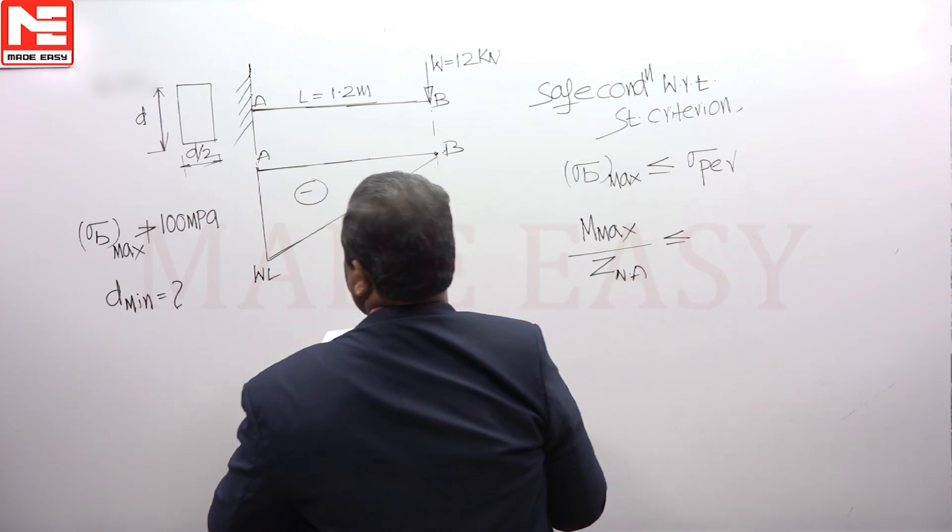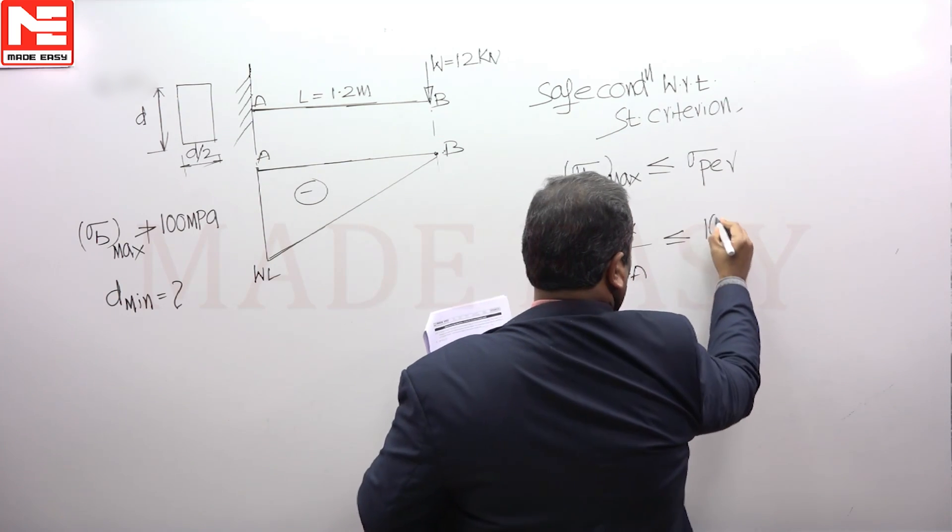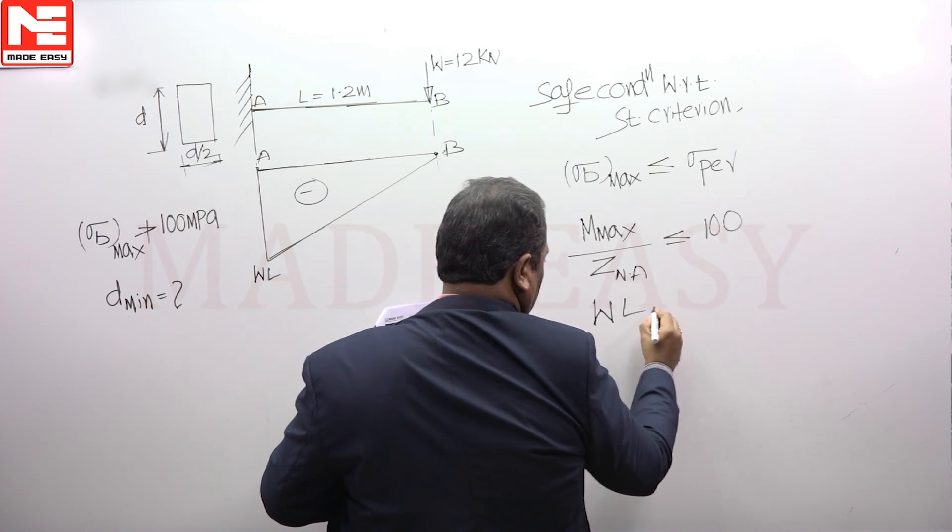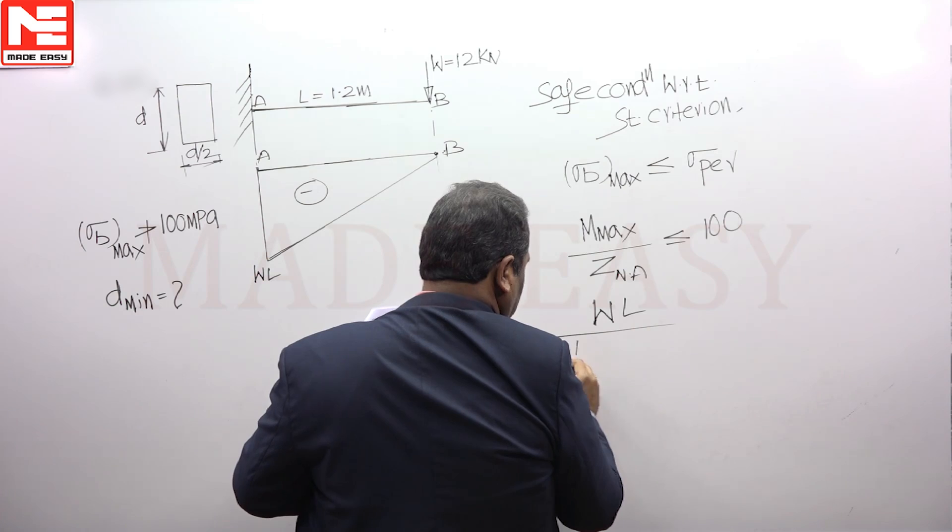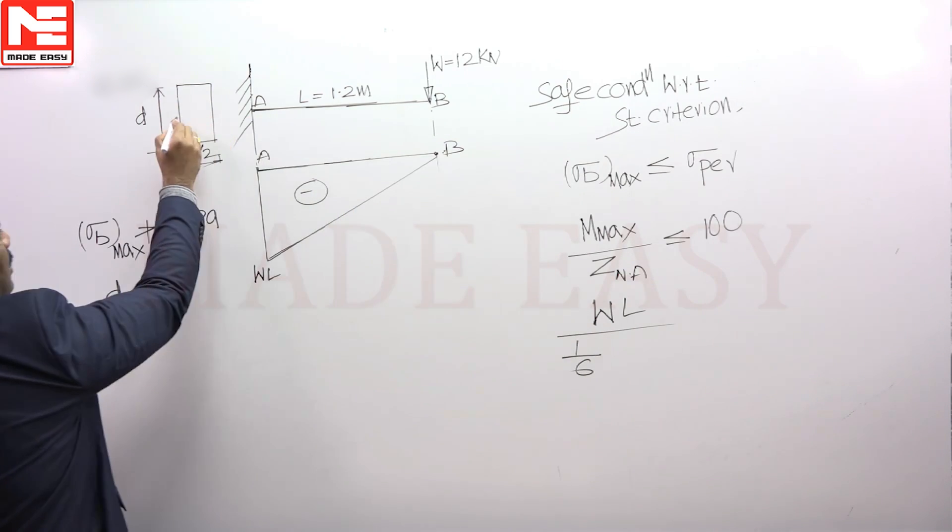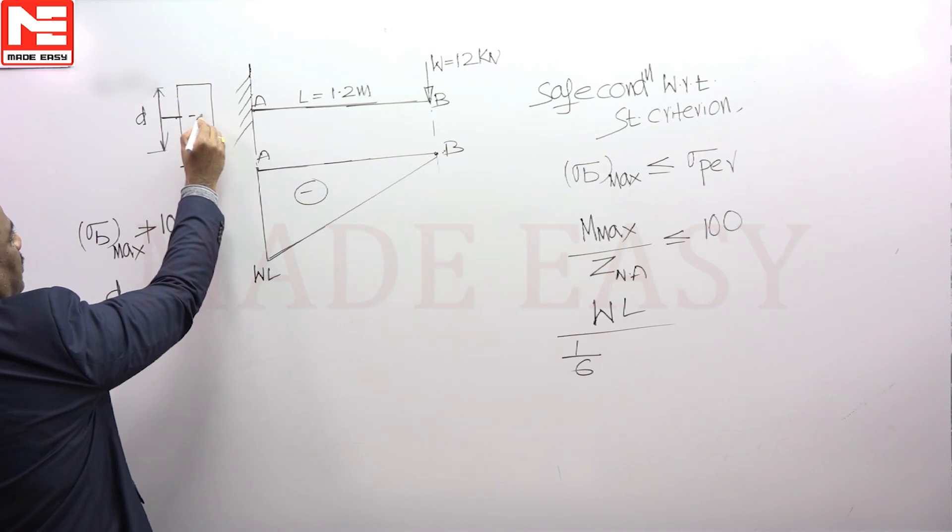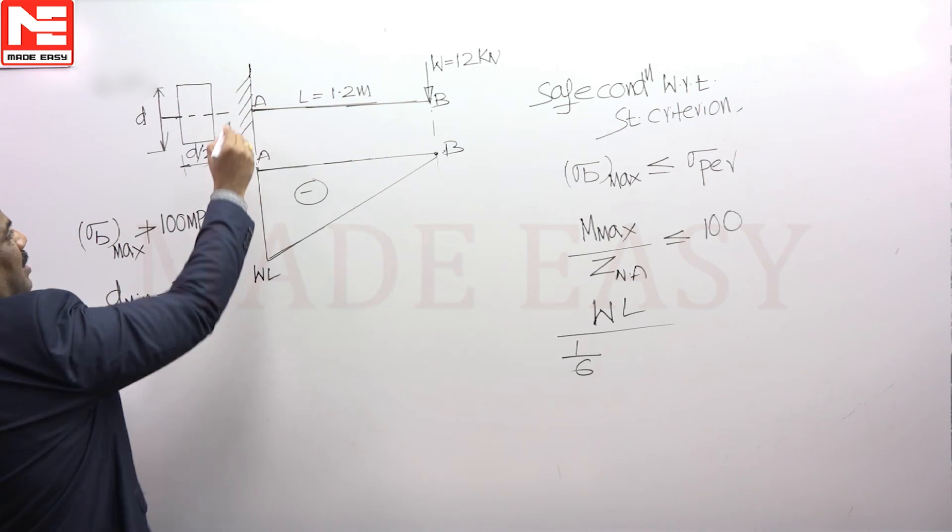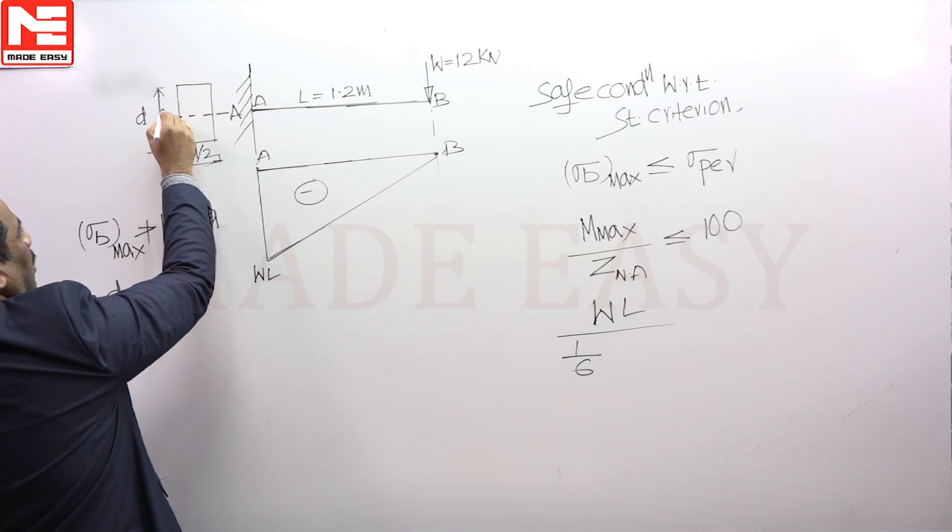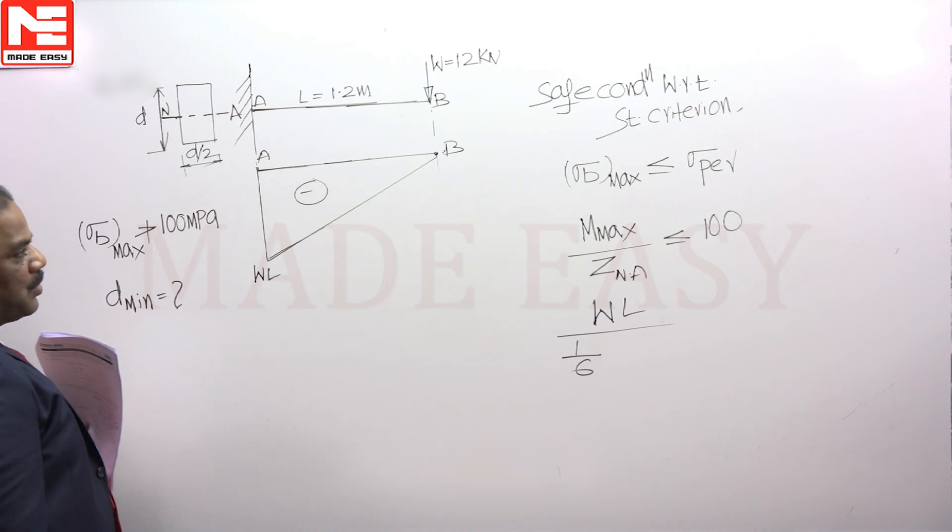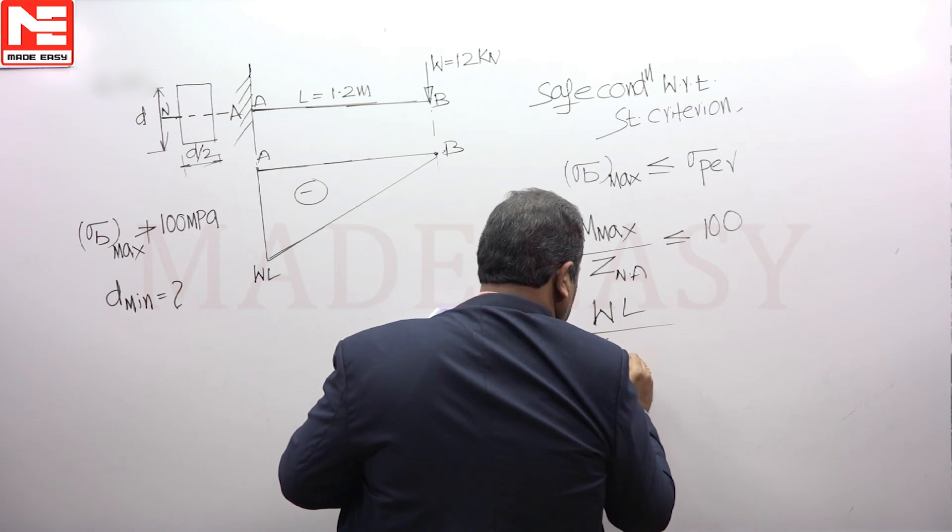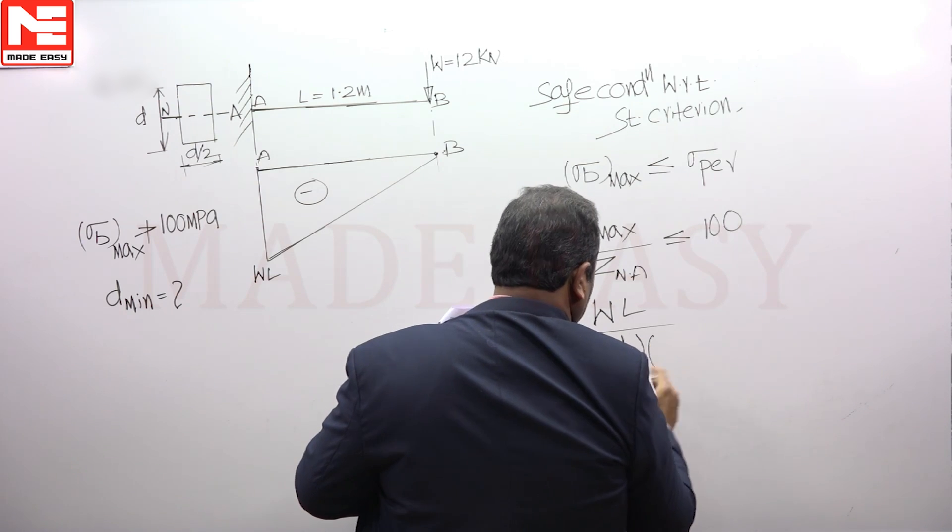The permissible stress is given as 100 megapascals, and the maximum bending moment is W into L divided by section modulus about neutral axis. The neutral axis always coincides with the horizontal central axis when the beam is subjected to bending in vertical plane. The section modulus will be one-sixth B D squared.